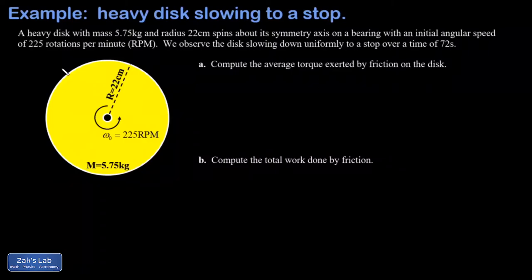In this video, we're given a heavy disc with a mass of 5.75 kilograms and a radius of 22 centimeters. This disc is spinning about the center with an initial velocity of 225 rotations per minute, so we're going to have to convert that to radians per second.